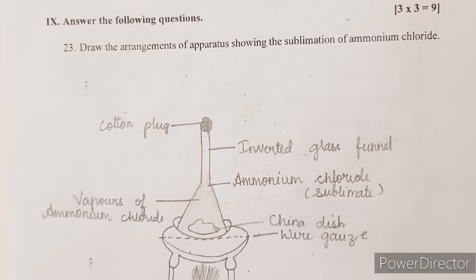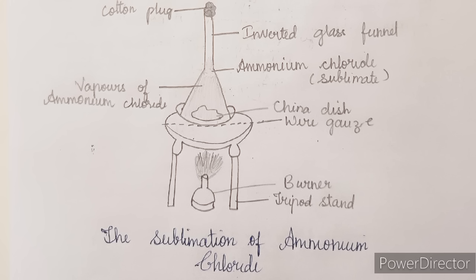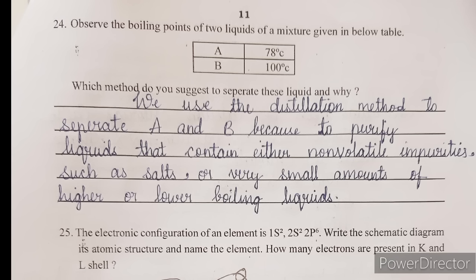Next: answer the following questions, each carrying three marks — nine marks for this main. First: draw the arrangement of apparatus showing the sublimation of ammonium chloride. Here is the diagram showing the sublimation of ammonium chloride — you can refer to this diagram and draw it.